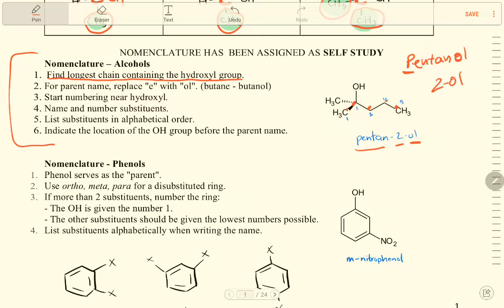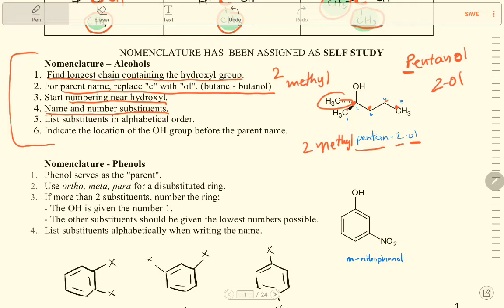The main steps are: find the longest hydrocarbon chain, start numbering near the hydroxyl group. Name and number the substituents — in this case there is a methyl group at carbon 2, so it is 2-methyl. List substituents in alphabetical order, then indicate the location of the OH group before the parent name. So you write 2-methyl-2-pentanol and so on.